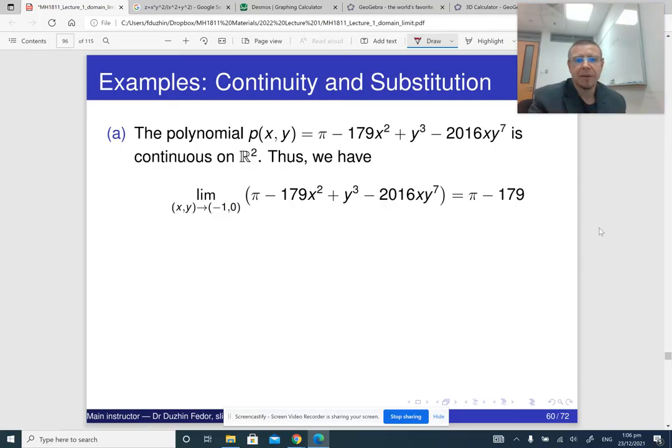Now some examples on applying limit laws. So they are rather trivial. We have a polynomial. So a polynomial is continuous. So for every point in R², this polynomial is continuous at that point. So all polynomials are continuous on the entire R².